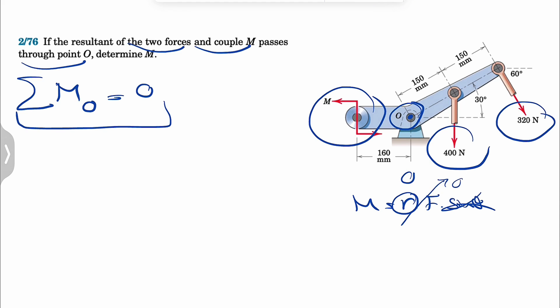Other ways to read this question that I usually get questions about is that students read it as the resultant of the two forces and the couple. So the resultant is only for the two forces and a couple. They ask me how come that's going to be zero about point O when we still have a moment or the couple M. This resultant will be the resultant of two forces and the couple, in case you guys are wondering.